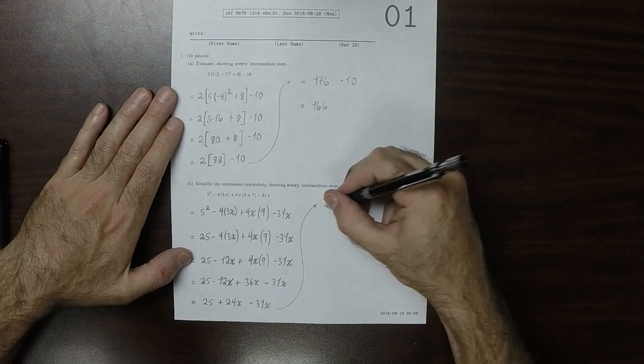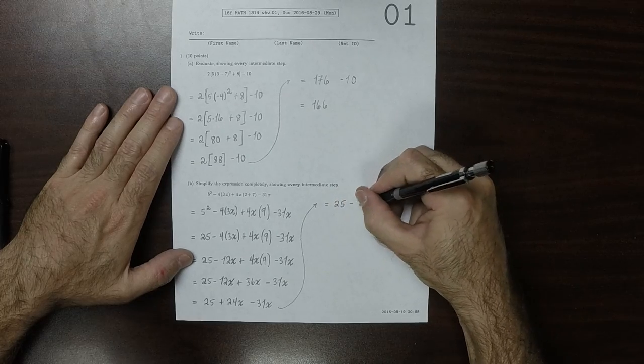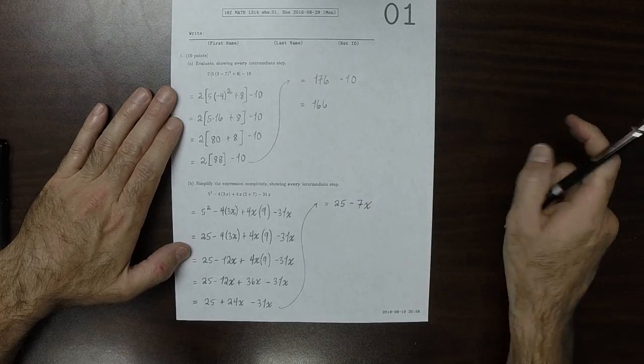So this is 25 minus 7x. And that's the answer to the exercise.